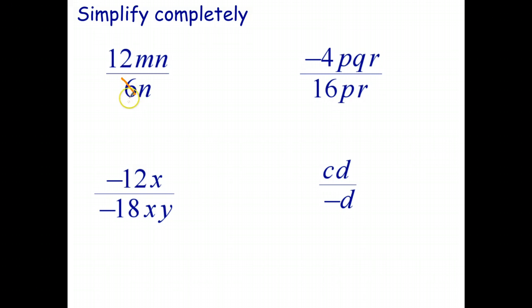6 goes into 6 once. I won't bother writing the 1. 6 goes into 12 twice. The n's cross out. And that leaves me with 2m over 1. But we never write the over 1, so we're just going to write the 2m.